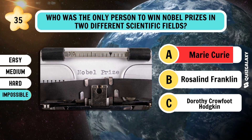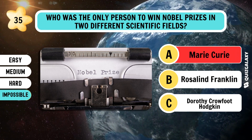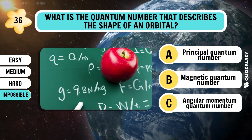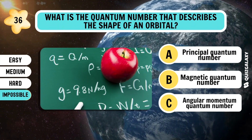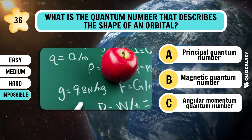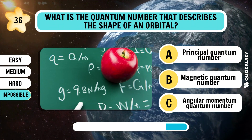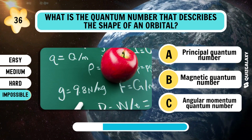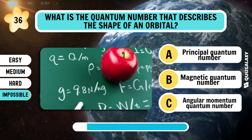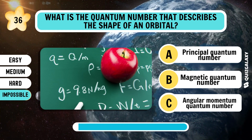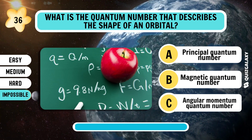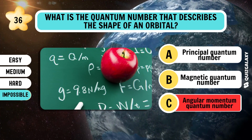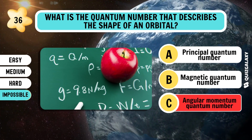Marie Curie. What is the quantum number that describes the shape of an orbital? Angular momentum quantum number.